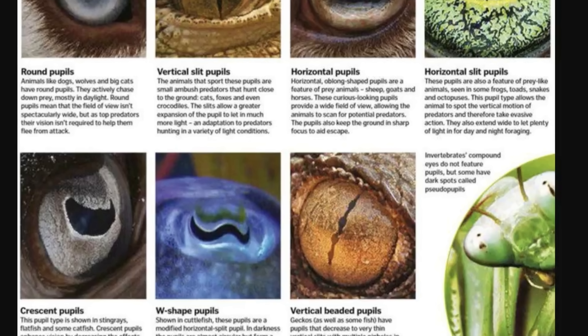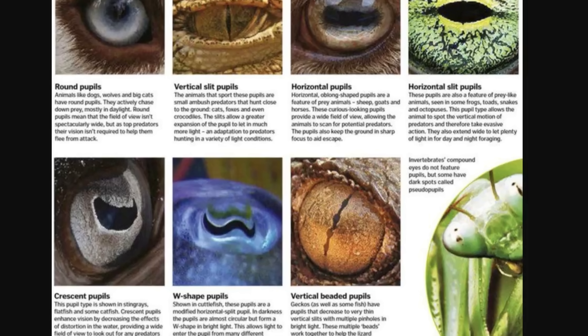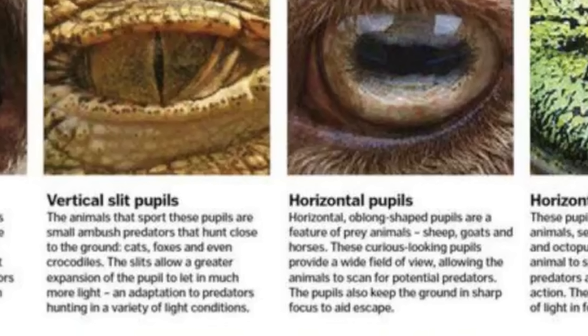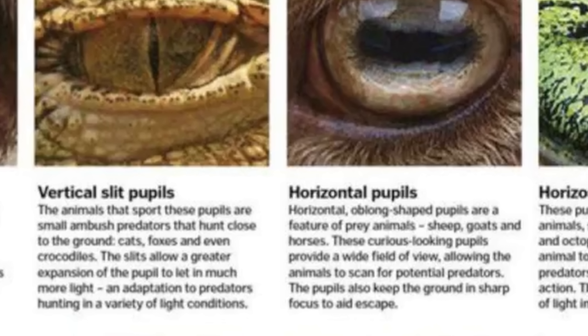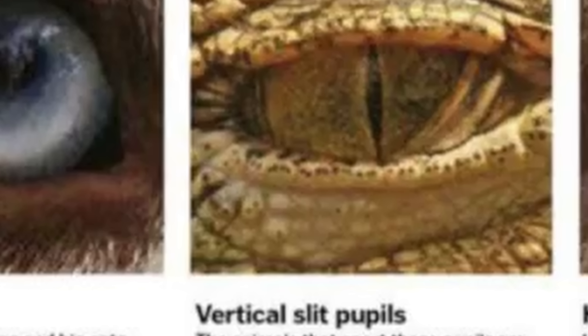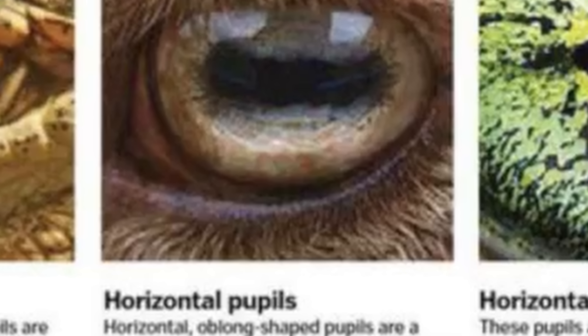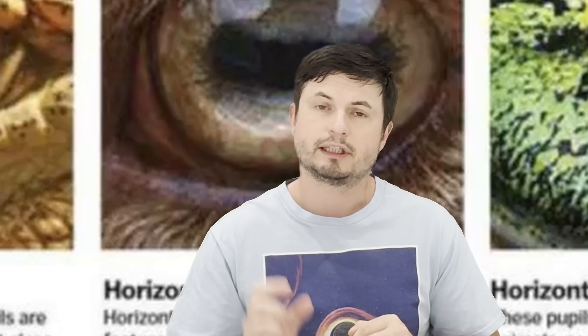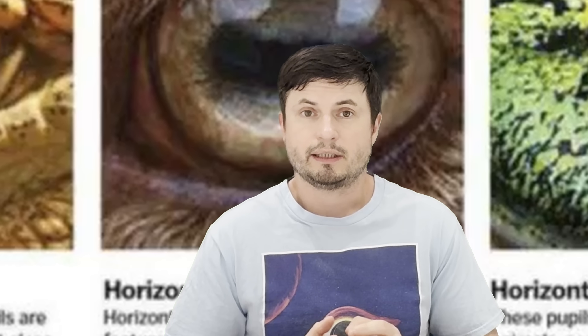This topic started a few years back when I was browsing social media and came upon an unusual picture showing various types of pupils with a brief explanation suggesting that certain types apply to only certain animals. For example, vertical pupils were mostly for hunters and horizontal pupils were mostly for prey. That seemed a little bit incorrect to me, so I decided to research it and produce this video.